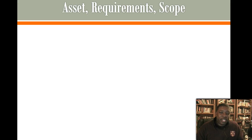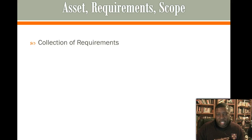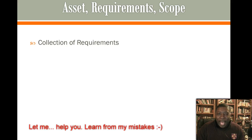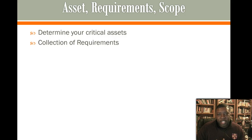Alright, so let's talk about asset requirements and scope. One of the first things you've been taught to do is to collect your requirements, and this is obviously after you identify your stakeholders. But I am going to tell you something different, because I am your cyber security quarterback — I've done this, I've hit all the potholes, I've seen where things go wrong. So what you should do before that is determine your critical assets. Determine what is important to your company and then test the security to those things, and make that part of your scope.